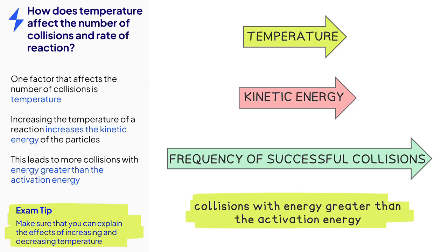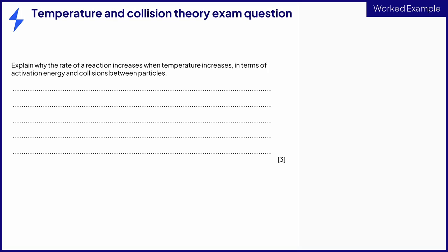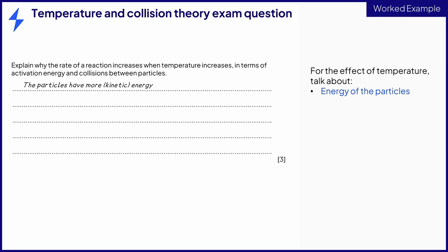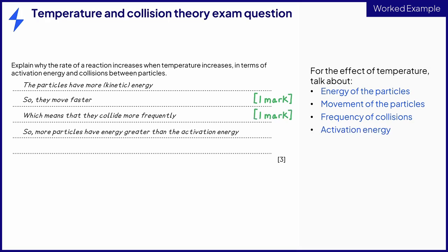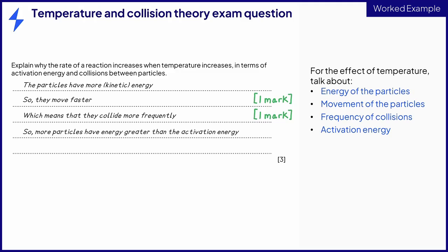You also have to be able to explain how decreasing the temperature affects the number of collisions and rate of reaction. For these types of questions, you should talk about energy — increasing the temperature means that the particles have more kinetic energy — then about movement, so the particles move faster. These two points gain the first mark. Next, talk about how often the particles collide: the particles collide more frequently, for the second mark. Finally, talk about activation energy: more particles have energy above the activation energy, for the third mark.